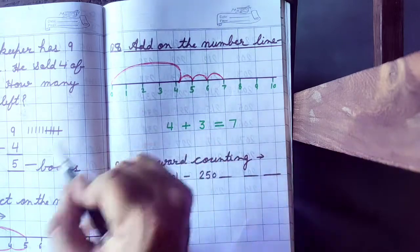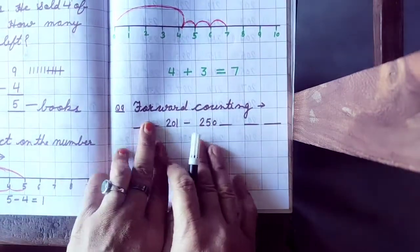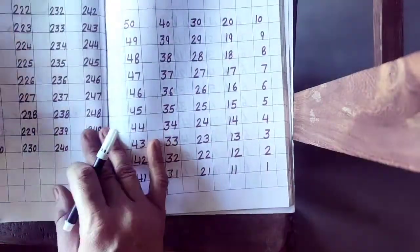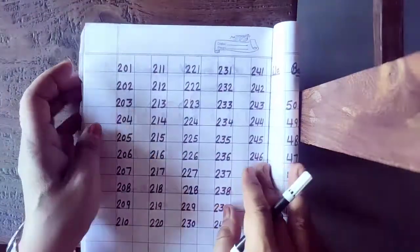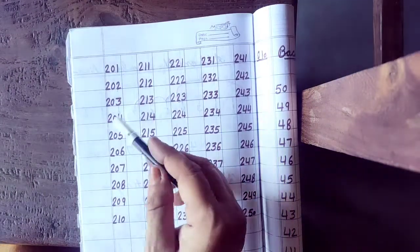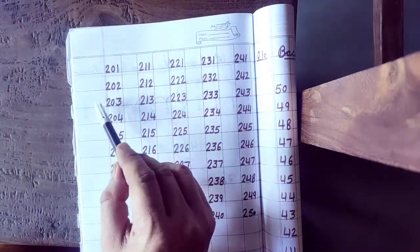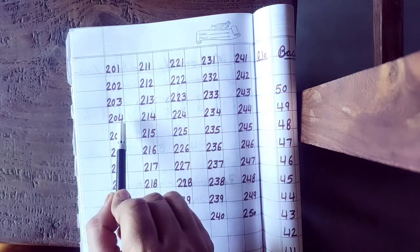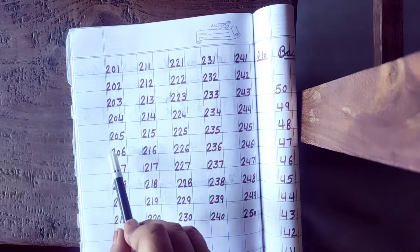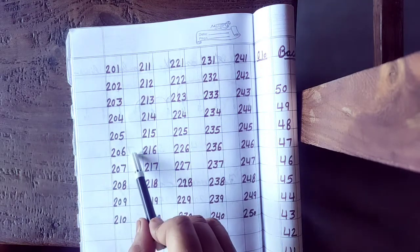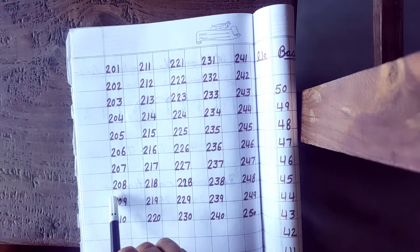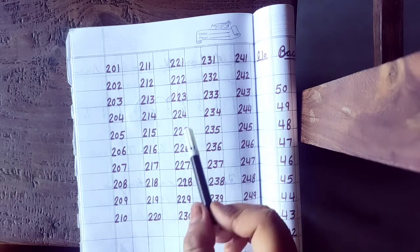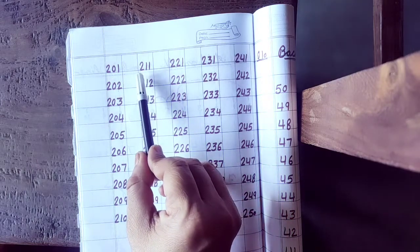Question number 9: forward counting, 201 to 250. You can write like this: 201, 202, 203, 204, 205, 206, 207, 208, 209, 210, then 211.